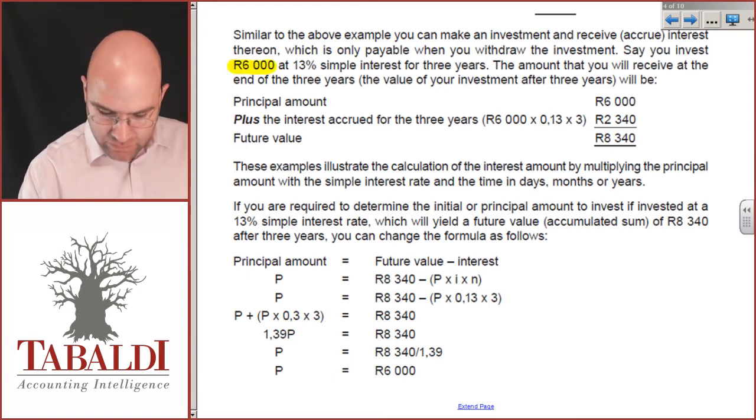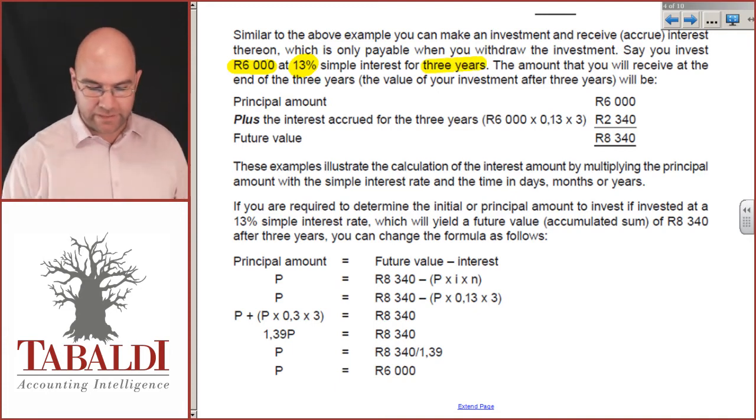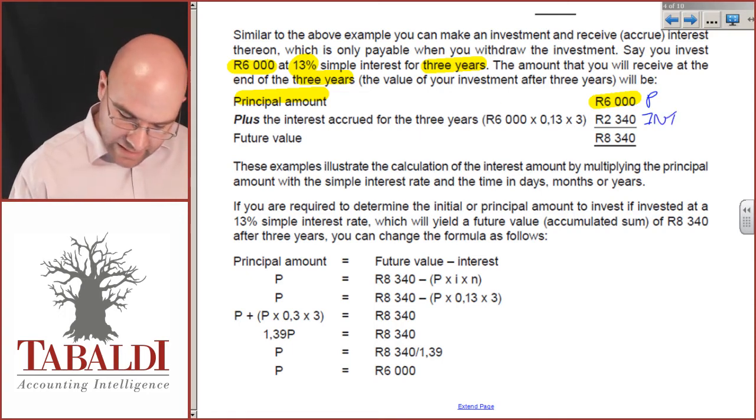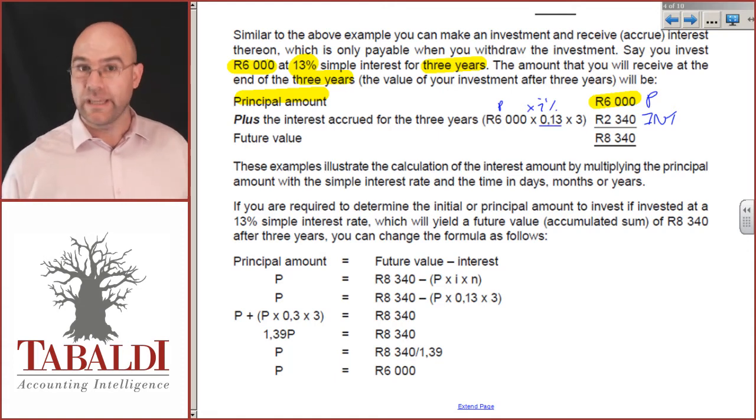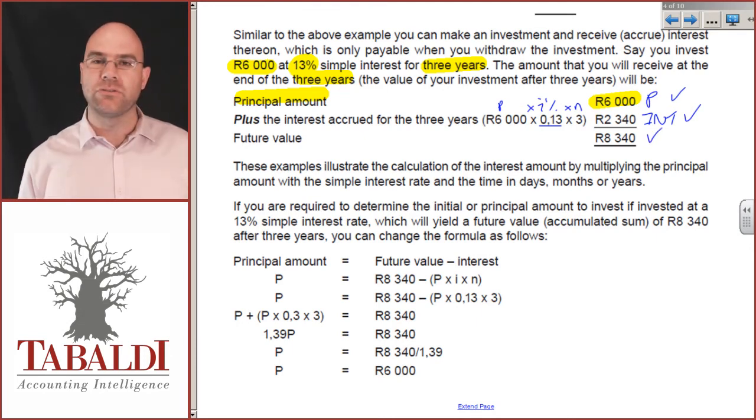Here, we've got 6,000 rand principal, 13% simple interest for three years. The amount you'll receive at the end of the three years will be the principal amount of 6,000 plus the interest, which is calculated as principal times the interest rate of 13%, which I've used a fraction, 0.13 times the duration in, which gives me 2,340. I add that to the principal and I get 8,340.